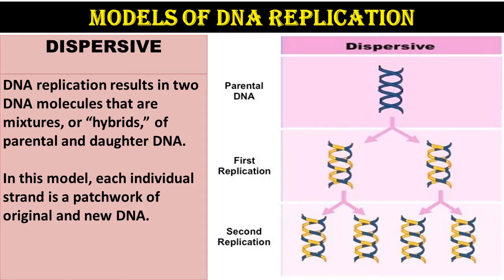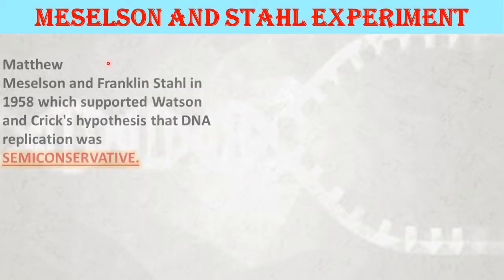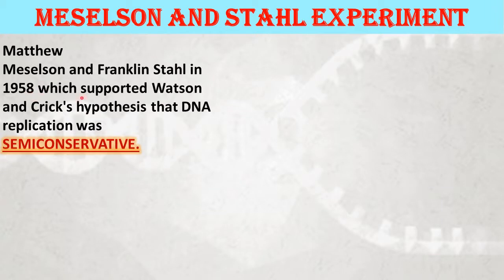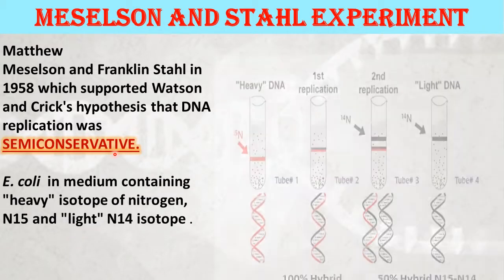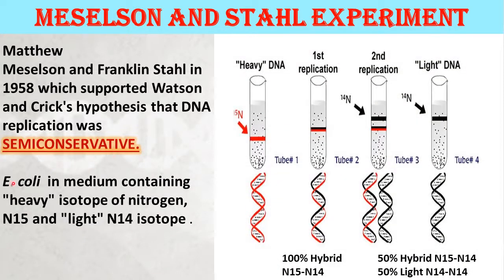Most biologists supported the semi-conservative model of replication, as it supported the double helix DNA structure. In the end, Meselson and Stahl cracked the puzzle. In 1958, Meselson and Stahl supported Watson and Crick's hypothesis that DNA replication was semi-conservative. They conducted an experiment on DNA replication using E. coli bacteria.